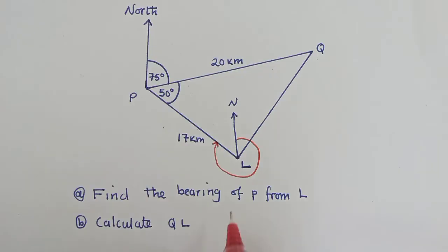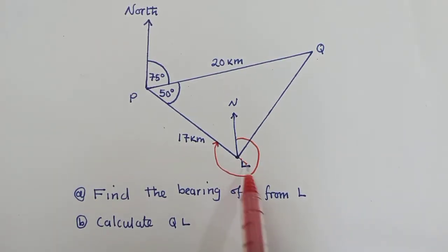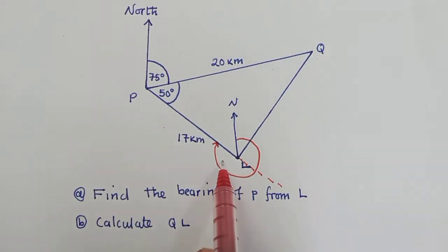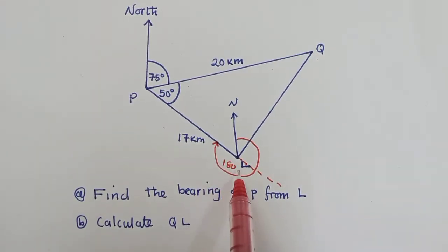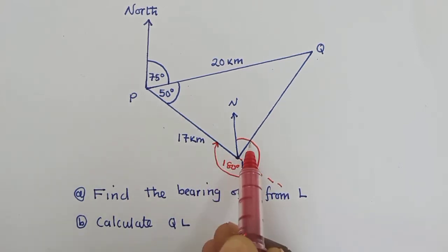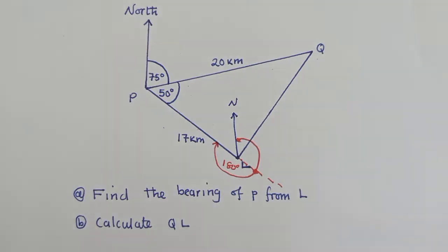So now to find this bearing, there are so many ways on how we can find it. We can either extend this line. And we know that the angle right here is 180 degrees from here up to here. So now we need to find the angle from here to here so that we can add them. So now how do you find this angle?